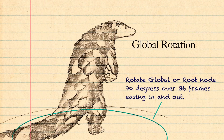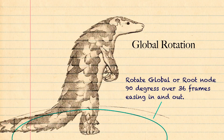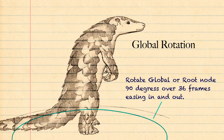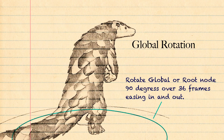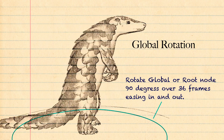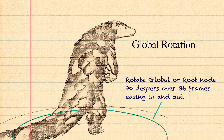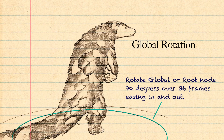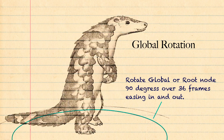Now comes the turn. This is where we put the value of 90 degrees into the global rotation and ease it in and ease it out. It's important to note that the next steps will be based on this value.